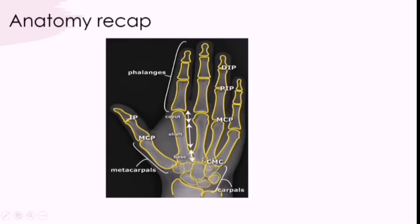Just a quick anatomy recap. You will have covered anatomy in your anatomy sessions previously, but it is important when x-raying the hand that you know your bony anatomy and also your soft tissue anatomy — which ligament is attached where, what happens if the ligament gets pulled, which bones are more likely to fracture, the names of the carpal bones. All of these things are really important that you do learn and know.